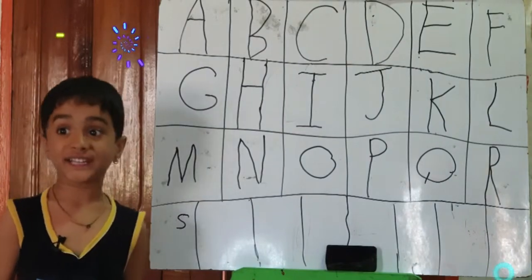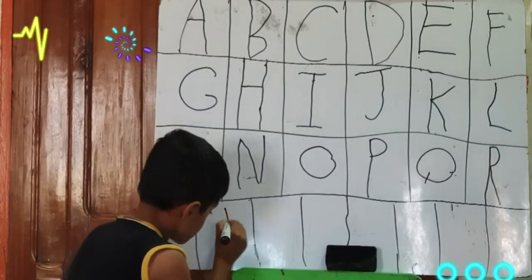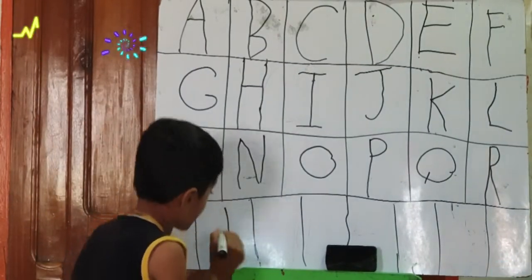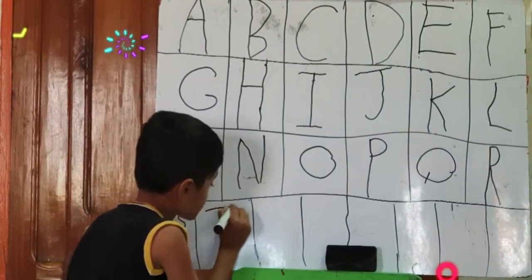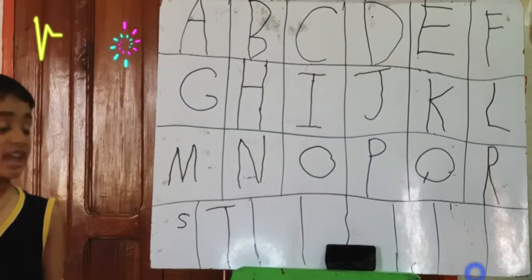Now we're learning T. One standing line and one sleeping line.